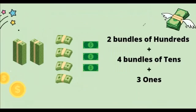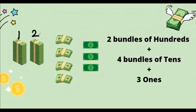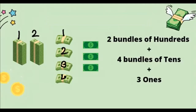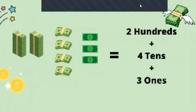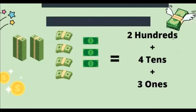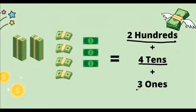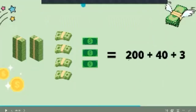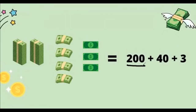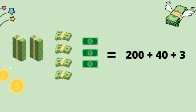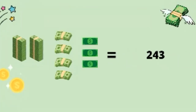Let's count. There are one and two — two bundles of hundreds. One, two, three, four — four bundles of tens. And one, two, three ones. That means there are two hundreds, four tens, and three ones. Two hundreds means two hundred, four tens means forty, and three ones is three. So the total money is two hundred and forty-three rupees.